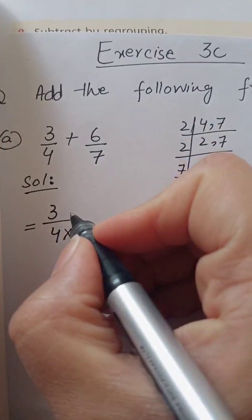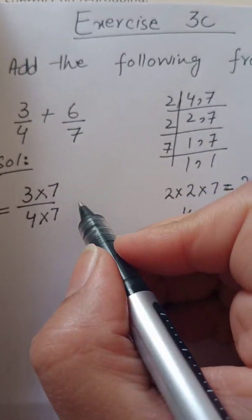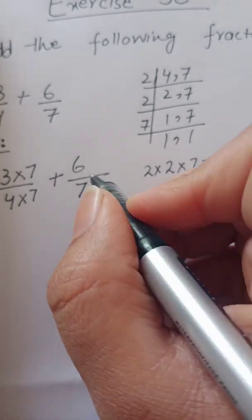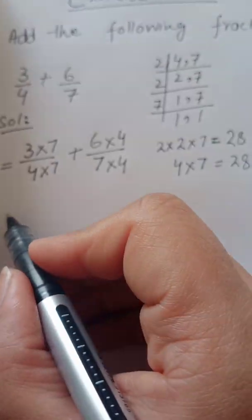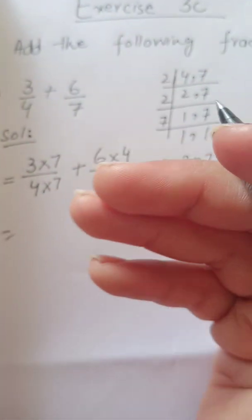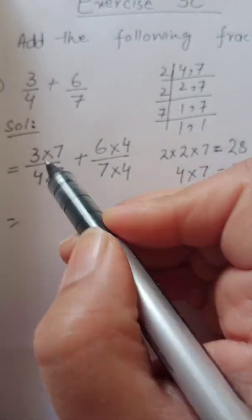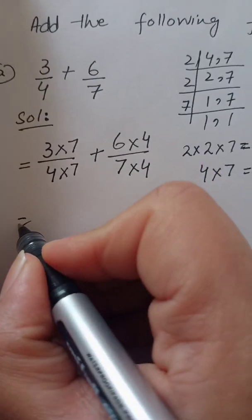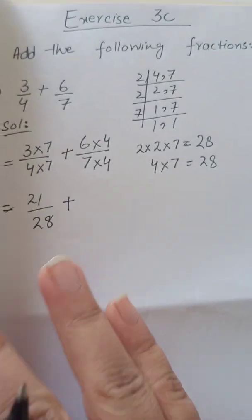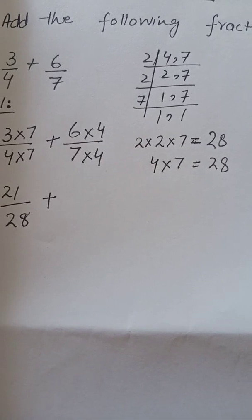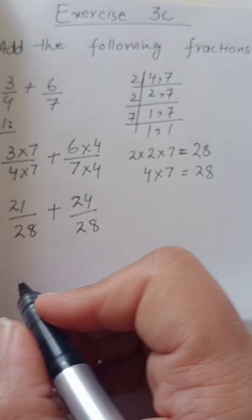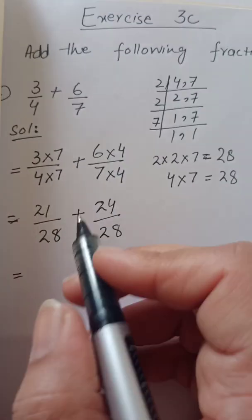Four ko seven se multiply karenge toh must numerator ko bhi karna padega — because it's a math rule. Ab 6 by 7 ko bhi 28 banana hai: seven ko four se multiply karenge. Isi tarah upar bhi four se karenge niche bhi — ye equivalent fractions hain, seven cancels with seven, four cancels with four. Ab: seven threes are twenty-one upon twenty-eight, plus six fours are twenty-four upon twenty-eight.